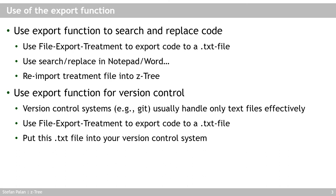The second use of the export function is for version control. Many version control systems like Git handle only text files effectively. You can export your treatment, import it into your version control system, and keep track of day-to-day changes, roll back changes, or apply changes to other related treatments — essentially forks in Git terms — efficiently and without mistakes.